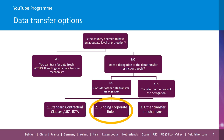Transfers of personal data to countries which have been deemed adequate are not restricted. These are countries that have been granted adequacy status by the European Commission or the UK Secretary of State respectively. It means the standard of data protection is essentially equivalent to that of the EU or UK. Transfers of personal data to non-adequate countries require data transfer mechanisms, unless a derogation applies. Not many countries are considered adequate and there are only a handful of derogations which are to be interpreted narrowly.